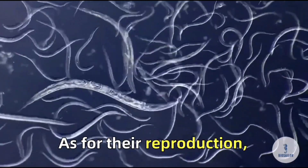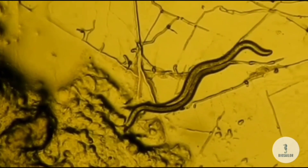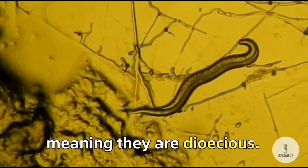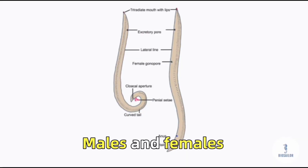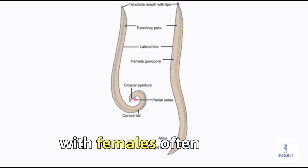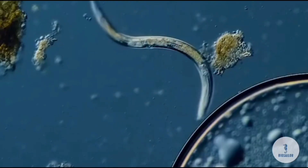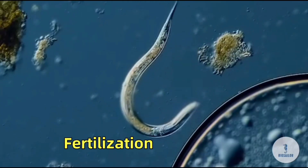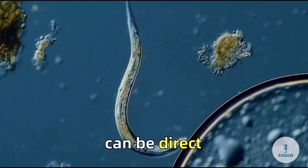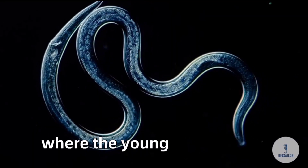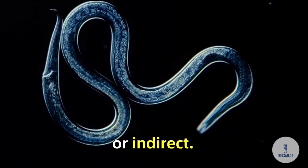As for their reproduction, roundworms exhibit separate sexes, meaning they are dioecious. Males and females are distinct, with females often being larger than males. Fertilization takes place internally, and the method of development can be direct, where the young ones closely resemble the adult, or indirect.